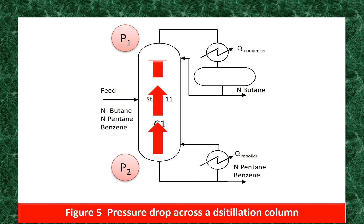The fluid flows through process equipment — be it piping, heat exchangers, or mass transfer equipment — and always faces resistance to flow. This causes the pressure of the flowing fluid to decrease. Hence, the pressure of the fluid decreases in the direction of flow. So in a distillation column, vapor flows from the reboiler at the bottom to the top through the trays. So P2, the pressure at the bottom, is greater than P1, the pressure at the top.